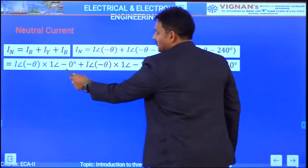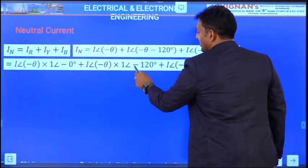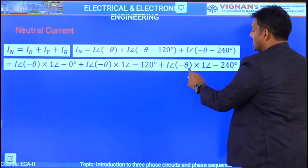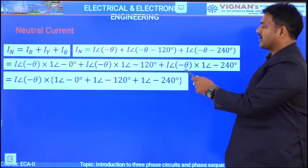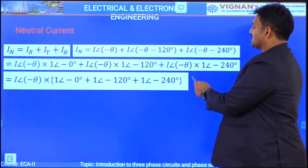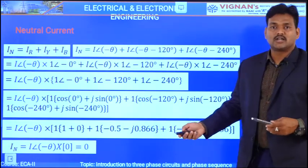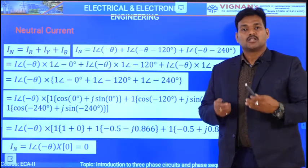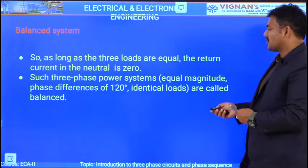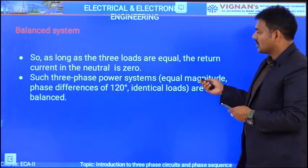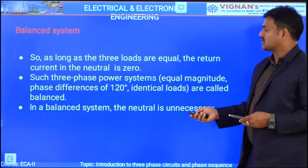Factoring out I∠−θ, the neutral current becomes I∠−θ × (1∠0° + 1∠−120° + 1∠−240°). The sum of these three unit phasors — I∠0° + I∠−120° + I∠−240° — resolves to zero. Therefore, the neutral current is zero under balanced conditions. In a balanced three-phase system the neutral is not necessary, and as long as the three loads are equal the neutral current is zero. A balanced three-phase system has equal magnitude voltages, equal 120° phase differences, and identical loads.